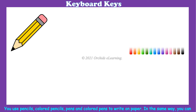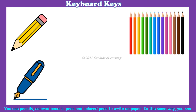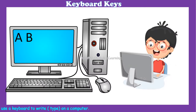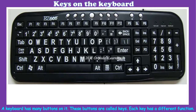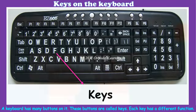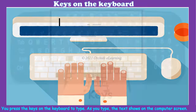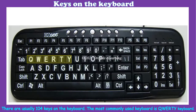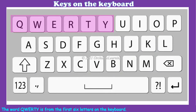You use pencils, colored pencils, pens, and colored pens to write on paper. In the same way, you can use a keyboard to write, or type, on a computer. A keyboard has many buttons on it — these buttons are called keys. Each key has a different function. You press the keys on the keyboard to type, and as you type, the text shows on the computer screen. There are usually 104 keys on the keyboard. The most commonly used keyboard is the QWERTY keyboard. The word QWERTY comes from the first six letters on the keyboard.